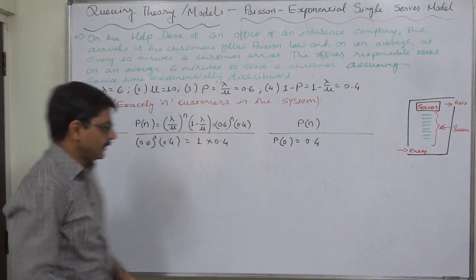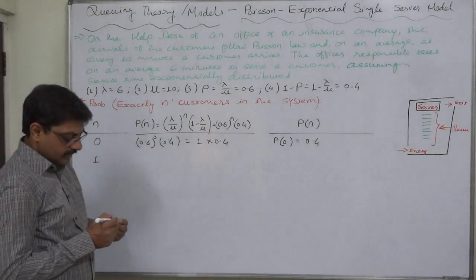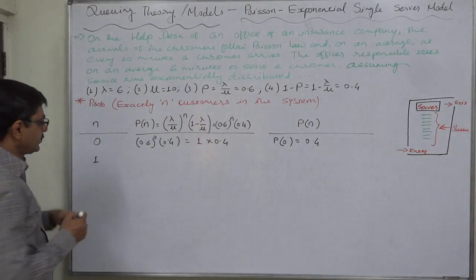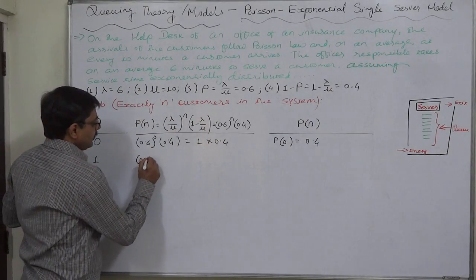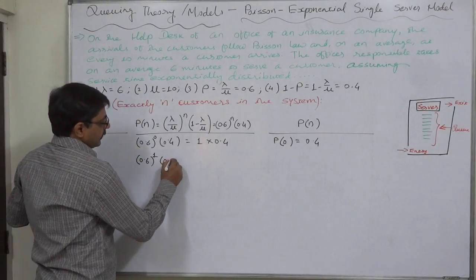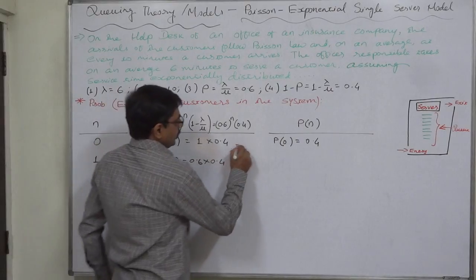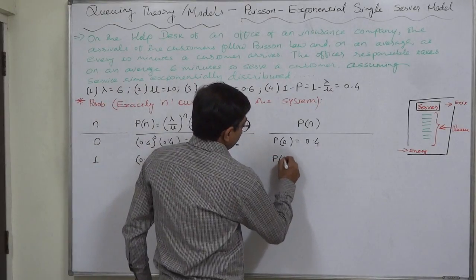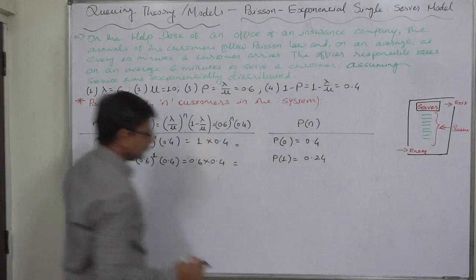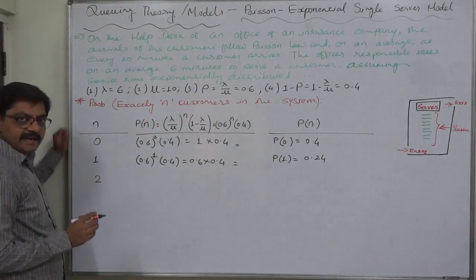Now suppose n takes the value 1. That means the probability of exactly one customer in the system equals the utilization rate raised to 1, multiplied by the idle rate. So it is 0.6 into 0.4, which equals 0.24.